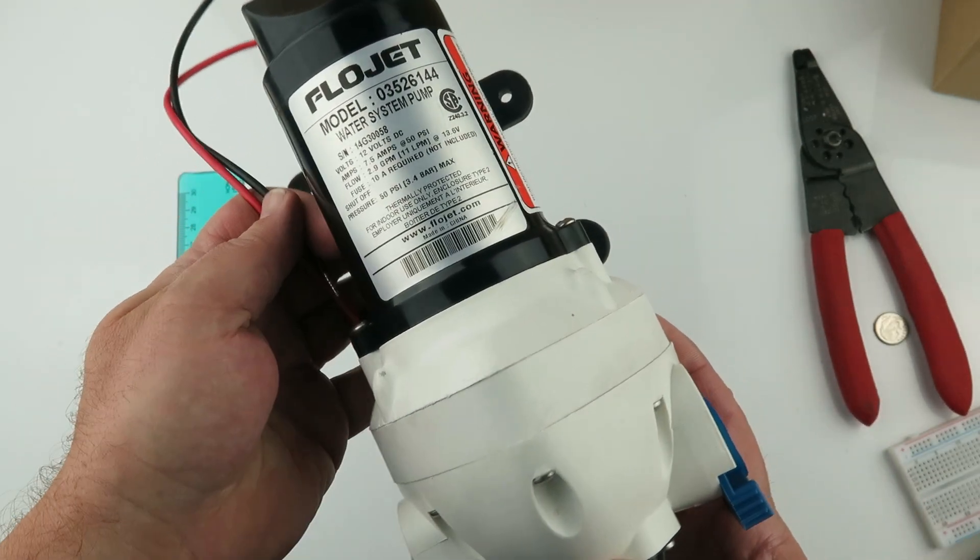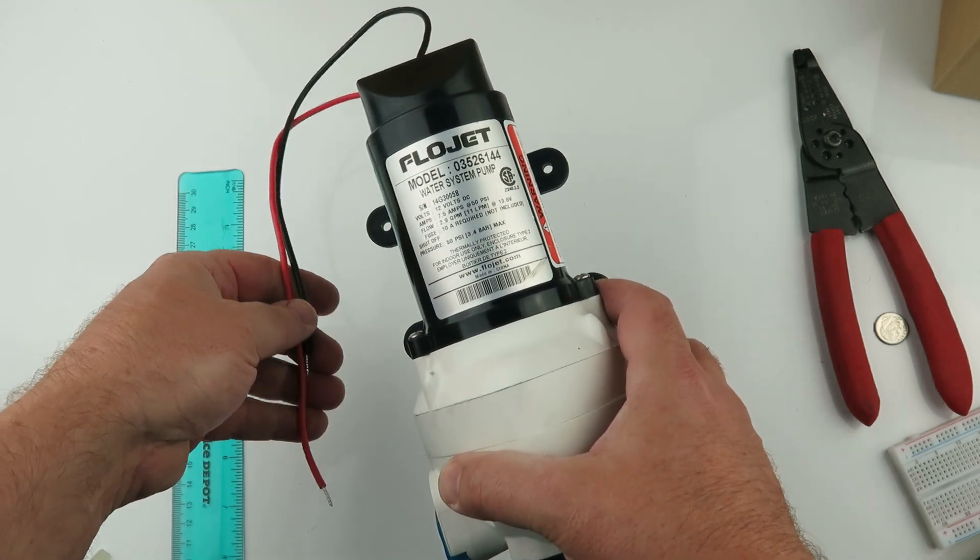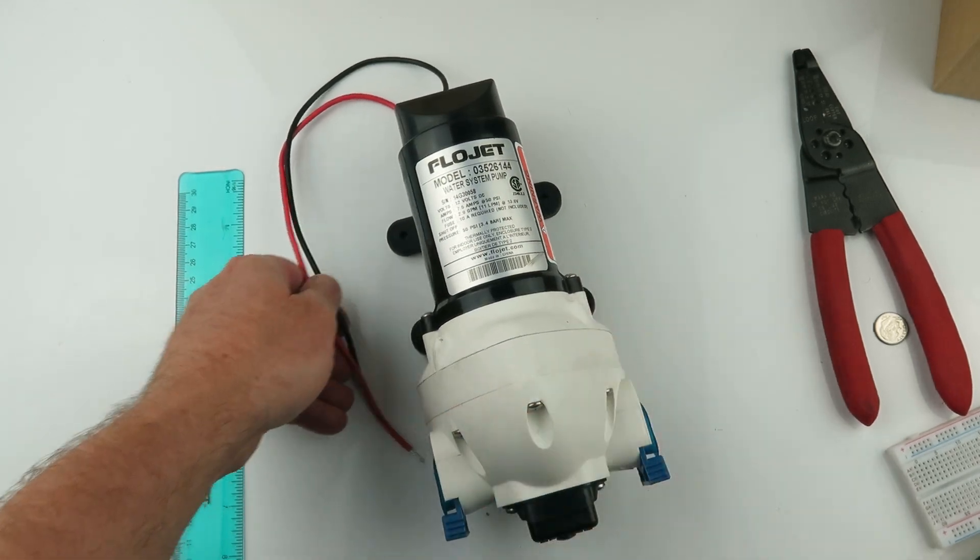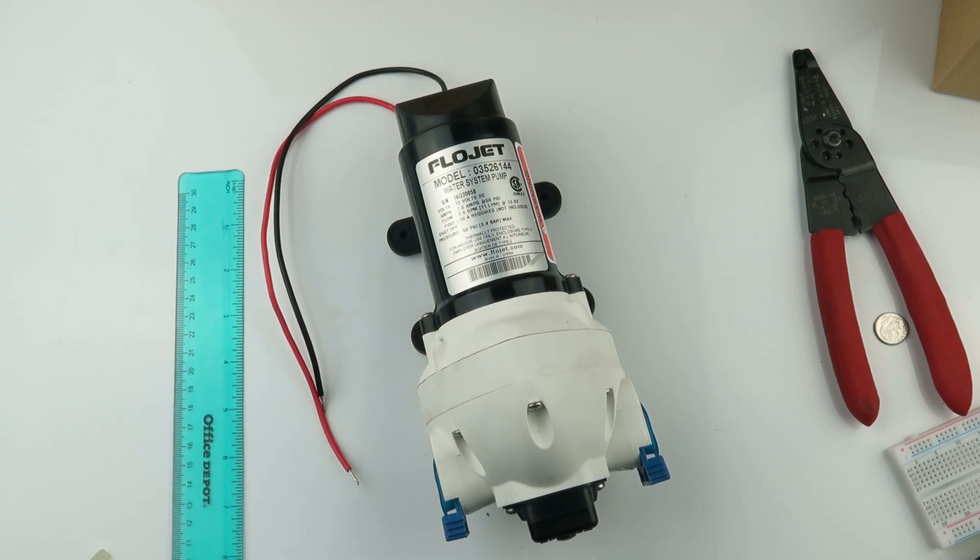Alright, 12 volts, 7.5 amps at 50 psi. 2.9 gallons per minute, 11 liters per minute.